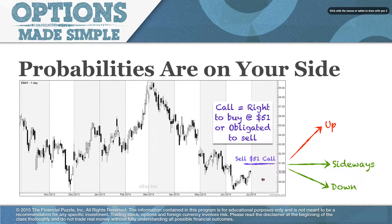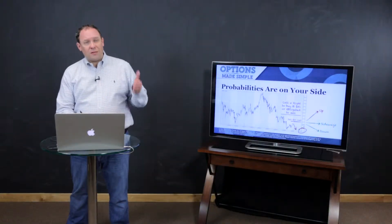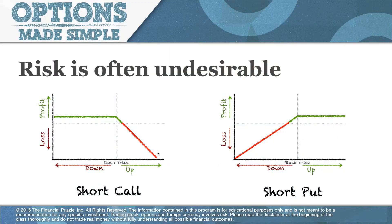The same thing is true with the call option. If the stock goes down, nobody's going to want to buy it at 51 when they could buy it on the open market at 48 or 49. So we're shorting the call in the case that we think the stock is going down. As long as the stock goes down or goes sideways, we've got a two out of three chance of making a profit on this trade. If the stock goes up, then we're getting into a situation where we're obligated to sell it at 51 while the stock is running really high — and that's the downside scenario.